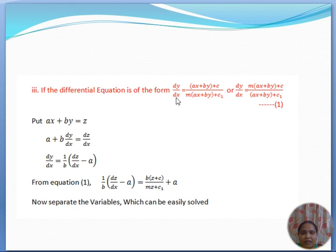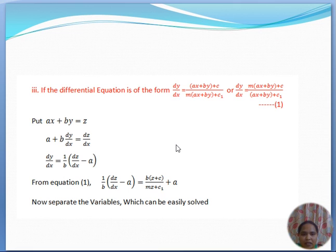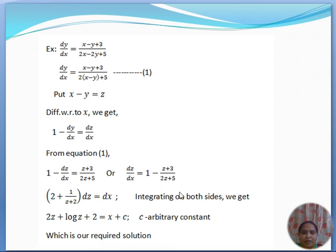Third form: any differential equation in the form dy/dx = (ax + by + c) / (a'x + b'y + c'), where there is a common term. In this case, take the common term as one variable. Here the common term is ax + by, so we set ax + by = z. Differentiating with respect to x gives a first order and first degree differential equation, and substituting back gives the solution. For example, this one.